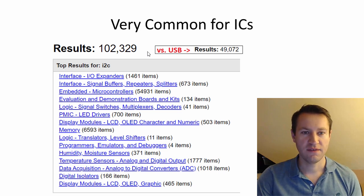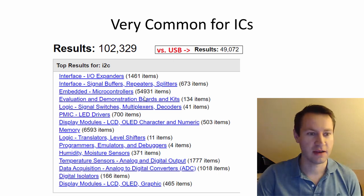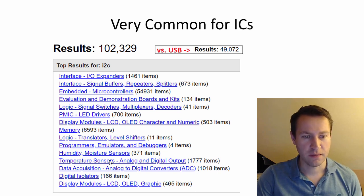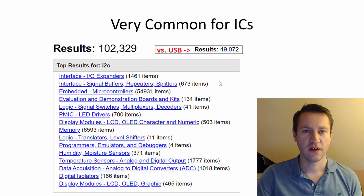You get 100,000 results. If you search for USB, you only get 49,000 results. So I2C is more common on DigiKey than USB, which is interesting. And it's used for all sorts of parts. It's used in microcontrollers all over the place, in different memories having I2C interfaces. Temperature sensors have I2C interfaces, data acquisition, analog digital converters use it all over the place. So it's used in a large number of parts, especially integrated circuits, or ICs. And that's why we're going to talk about it today in detail.